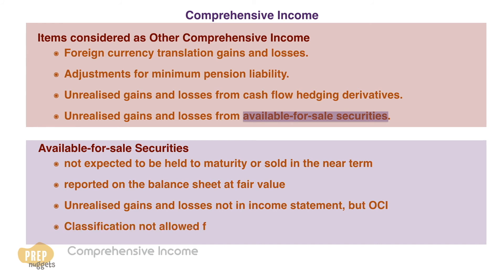Effective in 2018, IFRS will no longer allow the available for sale classification. However, firms will still be able to choose, at the time of purchase, to treat an equity securities investment as financial assets measured at fair value through other comprehensive income.